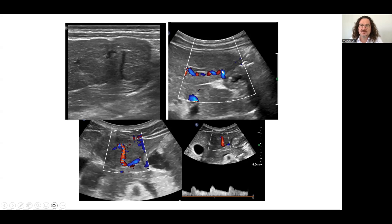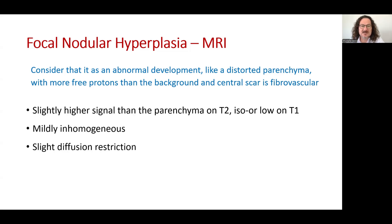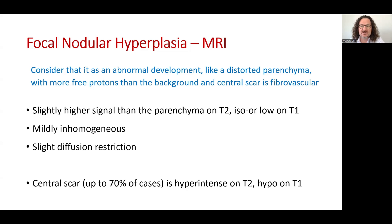The artery comes in separately with a corkscrew appearance, feeding centrally with low impedance and low resistance flow. When reading the MRI signal, we should consider that FNH is like a distorted parenchyma with more free water than the background, and the central scar is fibrovascular. That is why it has a slightly higher signal than the parenchyma on T2, is mildly inhomogeneous, and diffusion restriction is slight. The central scar is fibrovascular in nature, which makes it hyperintense on T2 images.